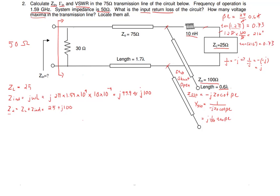Now we substitute those values: j times 0.01 times 0.73 gives 0.0073. That is the admittance value for our shunt open stub.